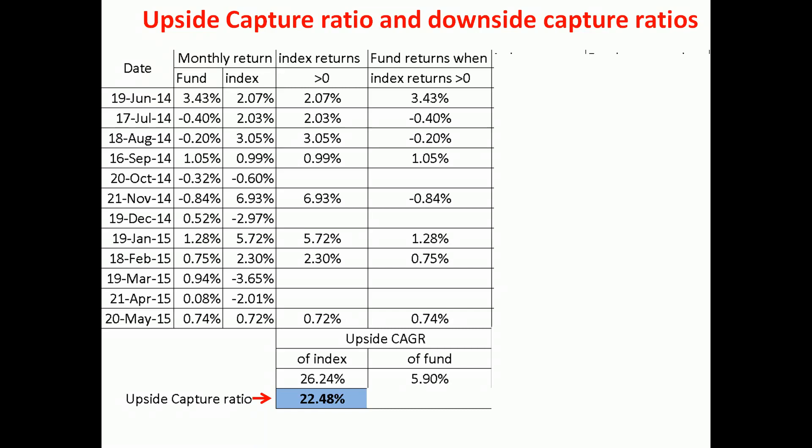The CAGR of the positive index returns is 26.24%, and the CAGR of the fund returns when the index returns were greater than 0 is 5.9%. So we are cherry-picking returns when the index was positive and the corresponding fund returns. That tells you the CAGR is 26.24% for the index and 5.9% for the fund, which means the fund has captured only about 22% of the index's positive returns — 5.9 divided by 26.24 is 22.48%. That's called the upside capture ratio.